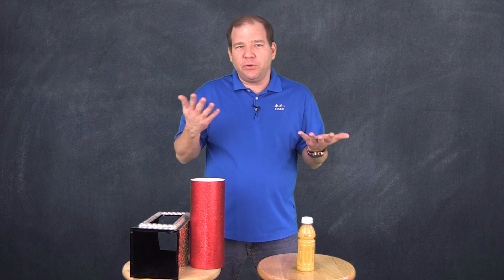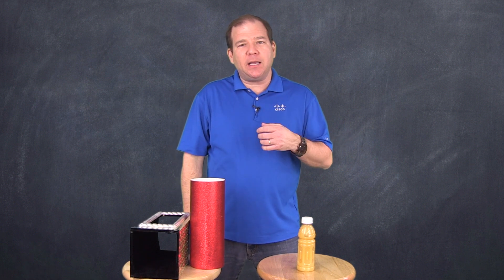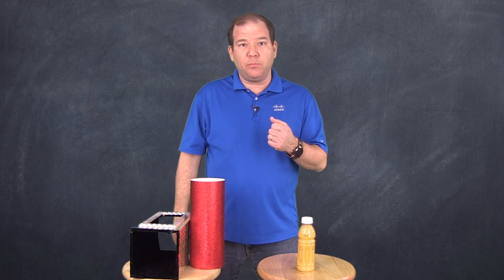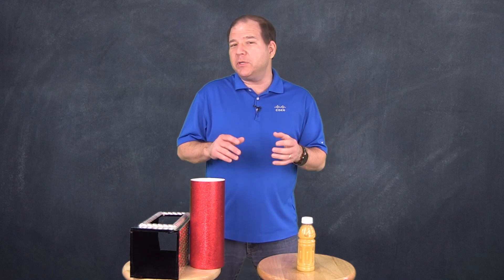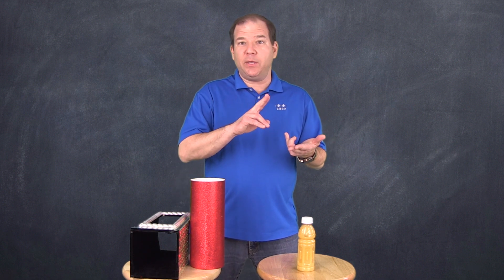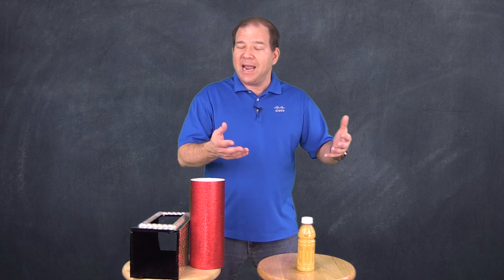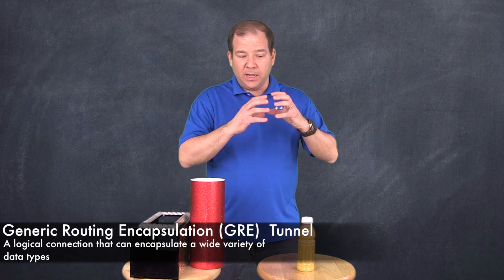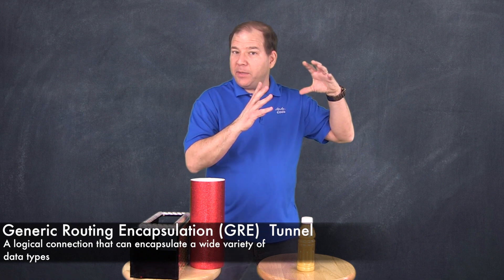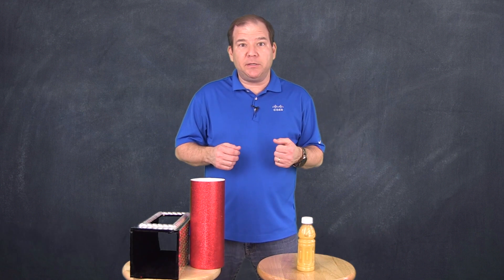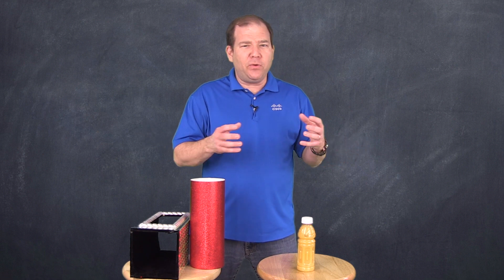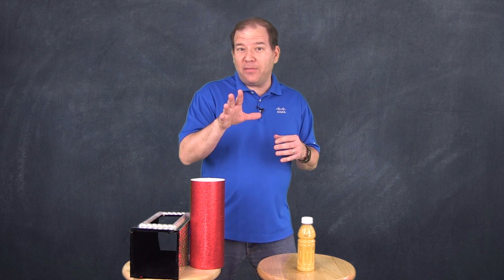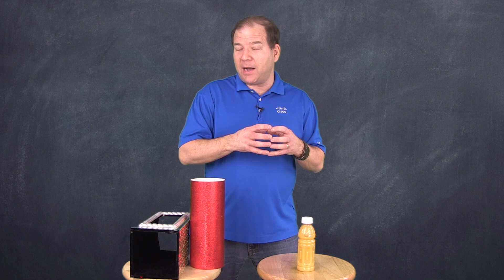There is a downside to IPsec: IPsec can only protect unicast IP traffic. What about multicast? What about broadcast? What a lot of people do is play a little trick — they take their IP unicast, broadcast, multicast, as well as non-IP traffic, and they encapsulate those packets in a GRE tunnel. So we've got a GRE tunnel inside of an IPsec tunnel, because GRE is going to be able to encapsulate just about anything we could send out of an interface. A GRE packet is a unicast IP packet, meaning that GRE packet can be protected by an IPsec tunnel.